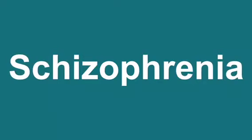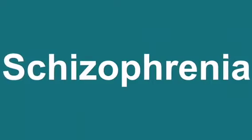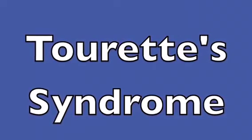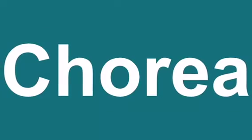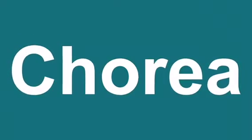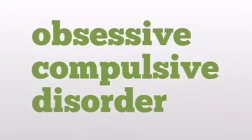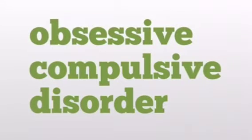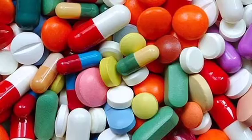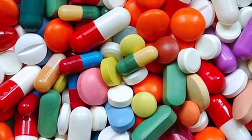The first indication is schizophrenia and other types of psychosis. The second is Tourette's syndrome. The third is Huntington's chorea. And the fourth includes other disorders such as obsessive compulsive disorders. There are five classes of antipsychotic drugs.